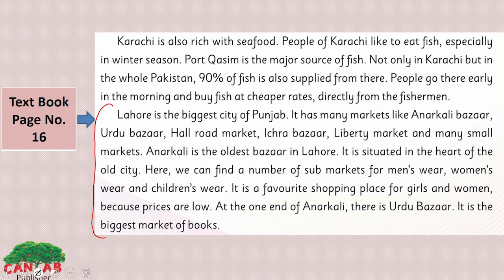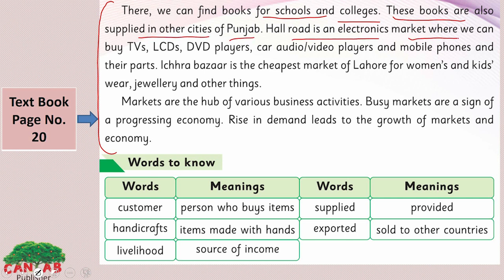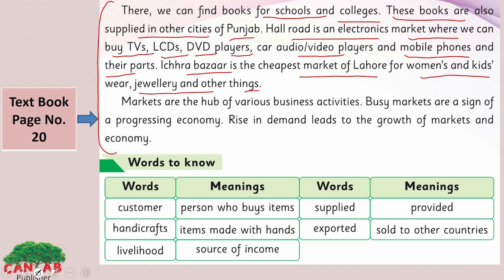Now look at the last paragraph on page number 20. We can find books for schools and colleges in Urdu Bazaar, and these books are also supplied to other cities of Punjab. Hall Road is an electronic market where we can buy TVs, LCDs, DVD players, audio-video players, mobile phones, and their parts. Ishra Bazaar is the cheapest market in Lahore for women's and kids' wear, jewellery, and other things. Markets are the hub of various business activities, and busy markets are a sign of a progressing economy.